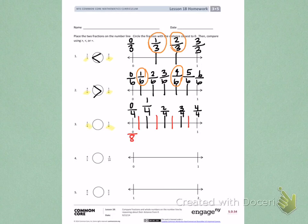And then I'll label 0 eighths, 1 eighth, 2 eighths, 3 eighths, 4 eighths, 5 eighths, 6 eighths, 7 eighths, 8 eighths.